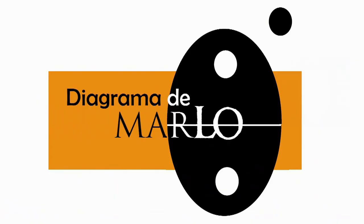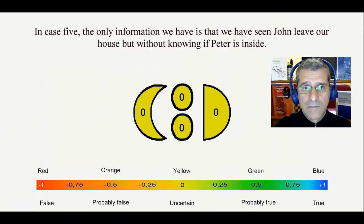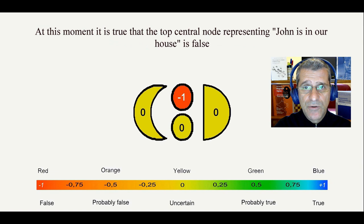In case 5, the only information we have is that we have seen John leave our house but without knowing if Peter is inside. At this moment, it is true that the top central node representing John is in our house is false. Consequently, it is false that both twins are at home.